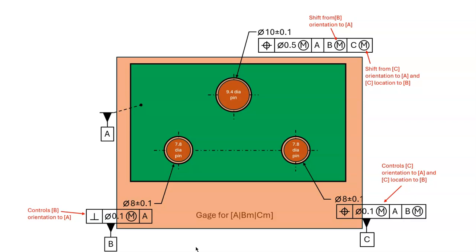Now let's look at our shift calculations. Remember that shift is defined with a hard gauge — our calculations are just a mathematical explanation of the part fitting on the hard gauge. At datum feature B, the gauge will have a fixed size pin at size 7.8. That's equal to the smallest allowable hole of 7.9 minus the perpendicularity tolerance of 0.1. The maximum possible shift occurs when the datum hole is at its largest allowable size of 8.1 and has no perpendicularity error.